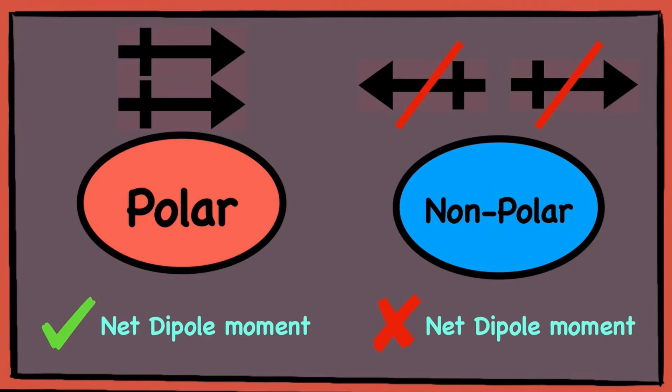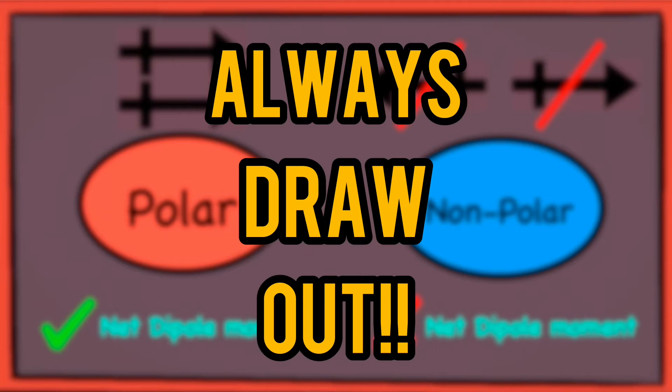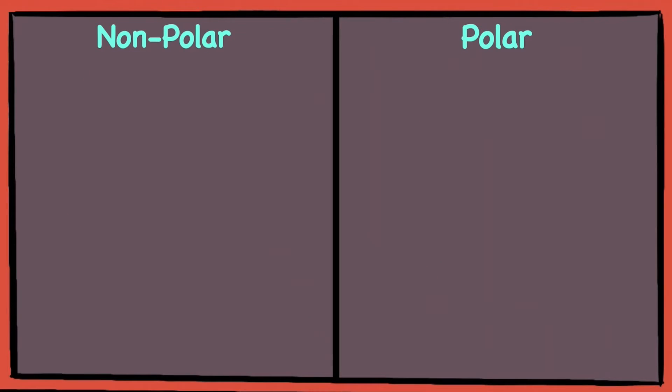To determine if a molecule is polar or not, the best way is to always draw out the dipole moment arrows. For bromine and chlorine, since the atoms in their respective molecules are the same, they each have the same electronegativities. Hence, their dipole moments will cancel each other out, leaving them with no net dipole moments, making them non-polar molecules.